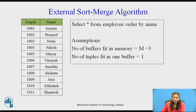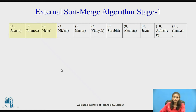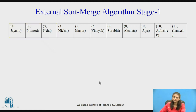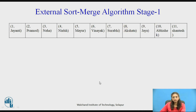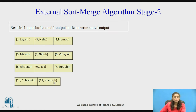Now consider the employee relation example with the query 'SELECT * FROM employee ORDER BY name'. Assume we can fit 3 buffers in main memory with one tuple per buffer. In stage one, divide the relation — since only 3 buffers fit, bring 3 tuples into memory, sort them, and write the result back to disk. Repeat for the next 3 tuples and so on, handling the last group with 2 remaining tuples. This creates 4 sorted runs.